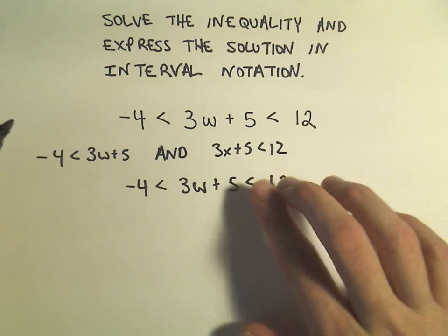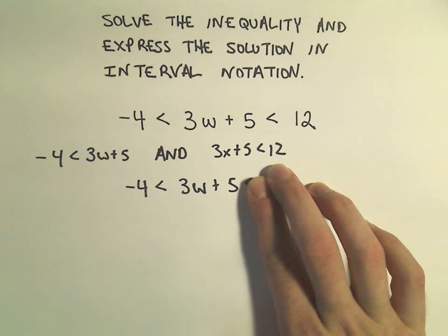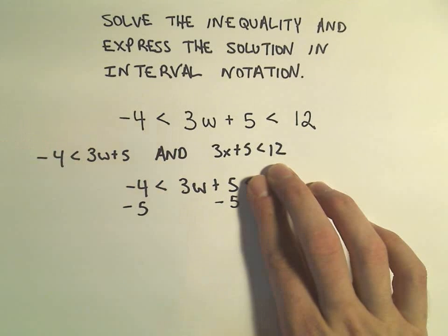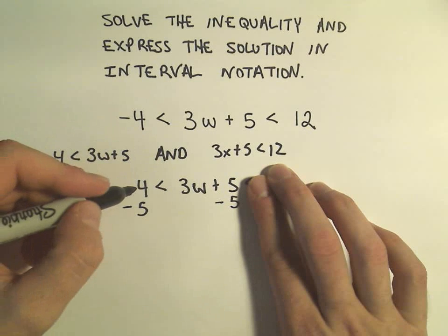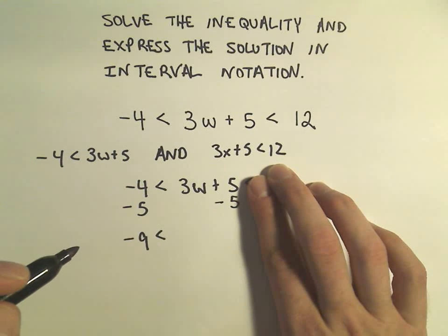The way that you do this - imagine if there was only one inequality here. Negative 4 less than 3w + 5. To me the first thing I would do would be to subtract 5 from both sides. I would get -4 minus 5 which is -9 and then I would have the 3w left over.